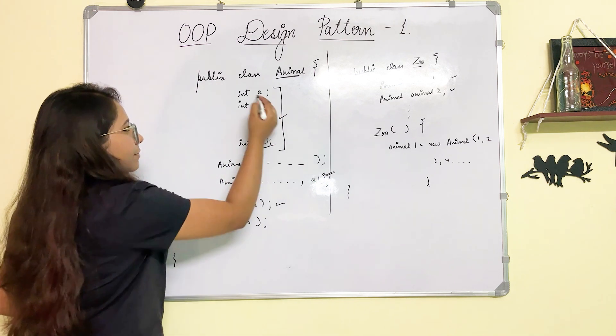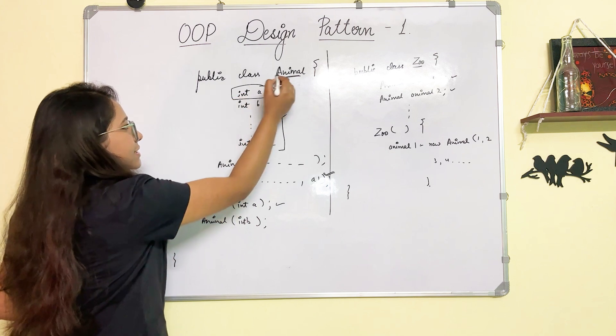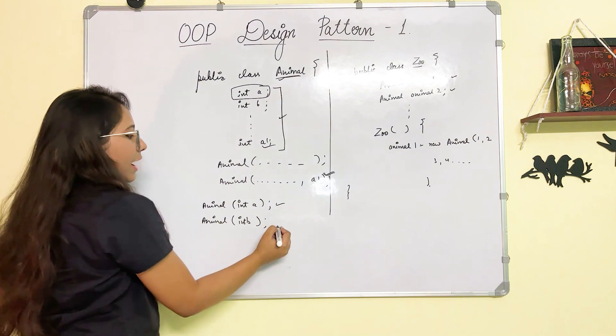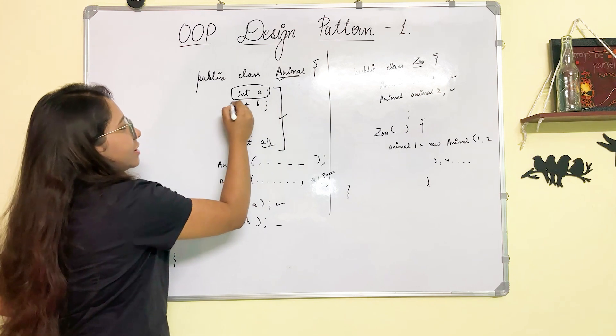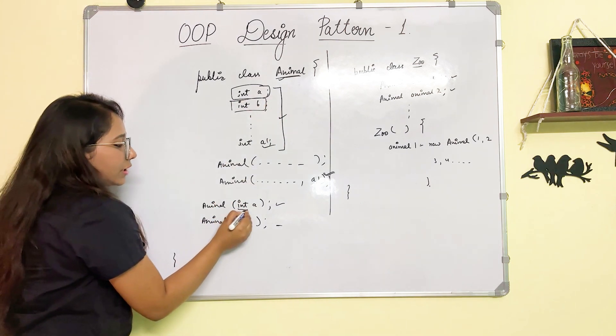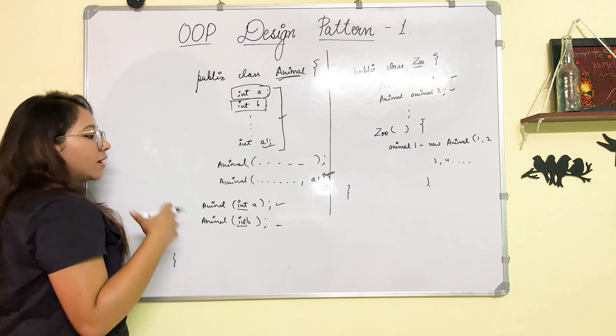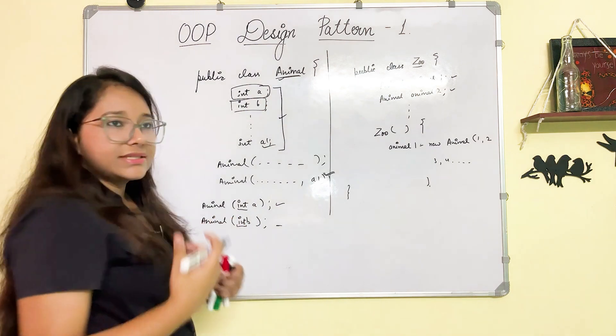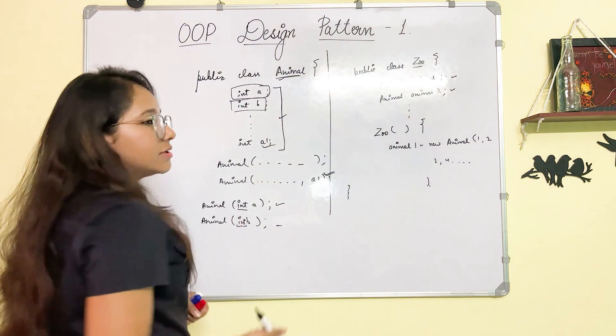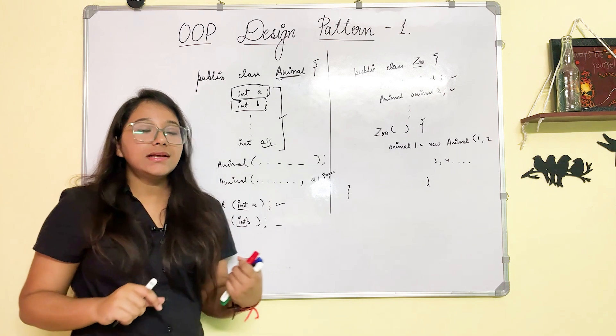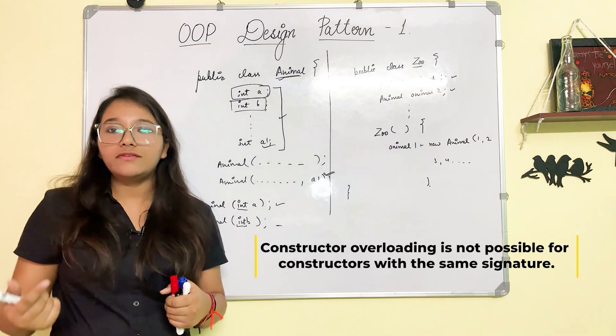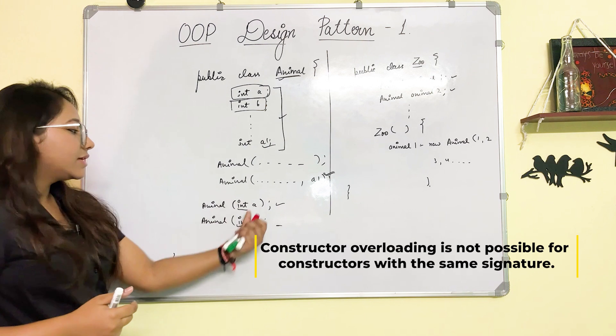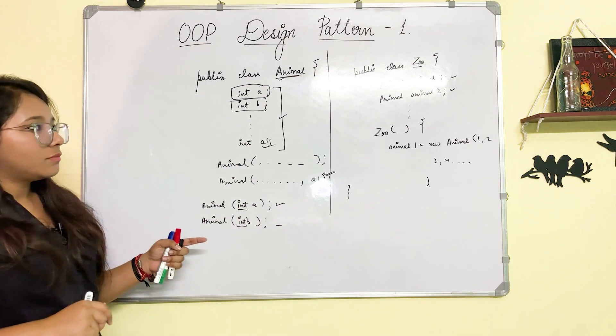Let's say you want to use this constructor to create an Animal object with this value. But since these two types are both int, the compiler cannot understand which type of constructor you want to create. Basically, if your signature is the same with the constructor, you cannot differentiate between the values that you want to initialize. So this is a major problem.